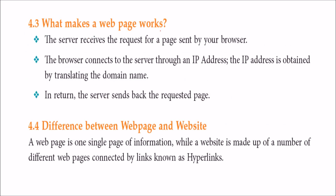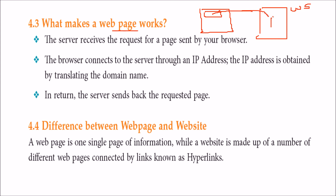What makes a web page work? First, the server receives a request from a page sent by a browser. Here is the browser — you write a URL, and this client sends a request to the web server. This web server has some IP address. The browser connects to the server through that IP address, which is obtained through the domain name server in the background — it translates the domain name you write into the IP address. In return, the server sends the required page back to the browser.